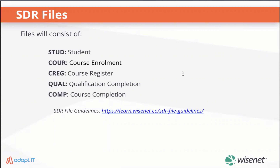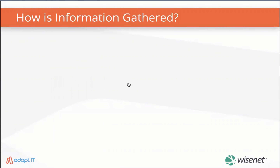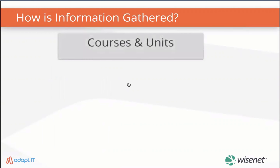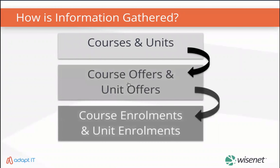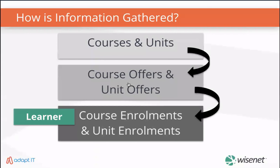Information in each of these files is collected using specific WISENIT fields. The SDR file guidelines article outlines each field in the SDR files and provides required information regarding collection and location in WISENIT. The data submitted in the five SDR files are all related and entered in WISENIT at various levels. At the first level you have your courses and units, then course offers and unit offers, then information from the course and course offer level goes into course enrollments, and unit and unit offer level goes into unit enrollments. Learner details are also linked to your course enrollments and unit enrollments.